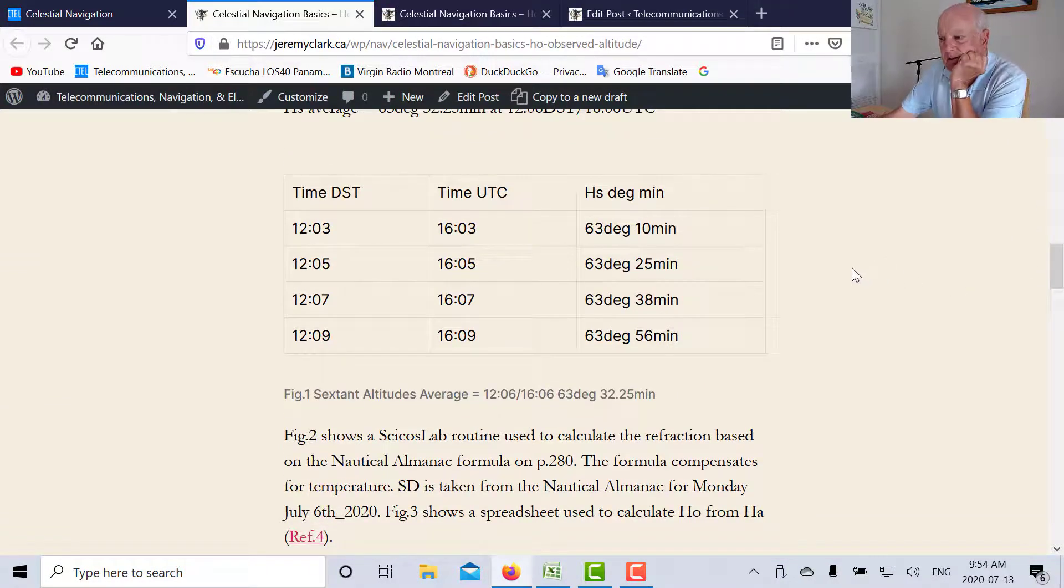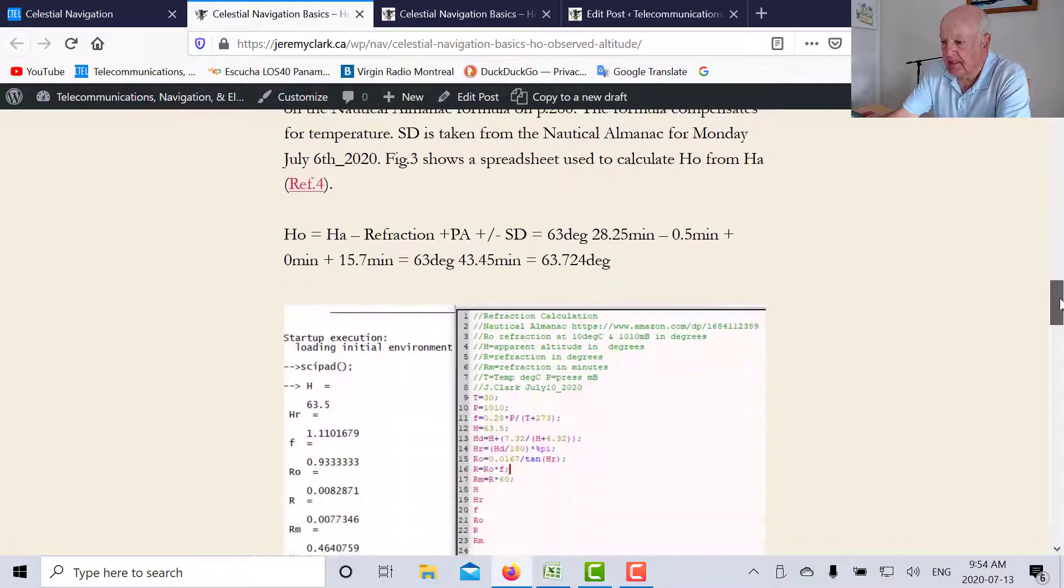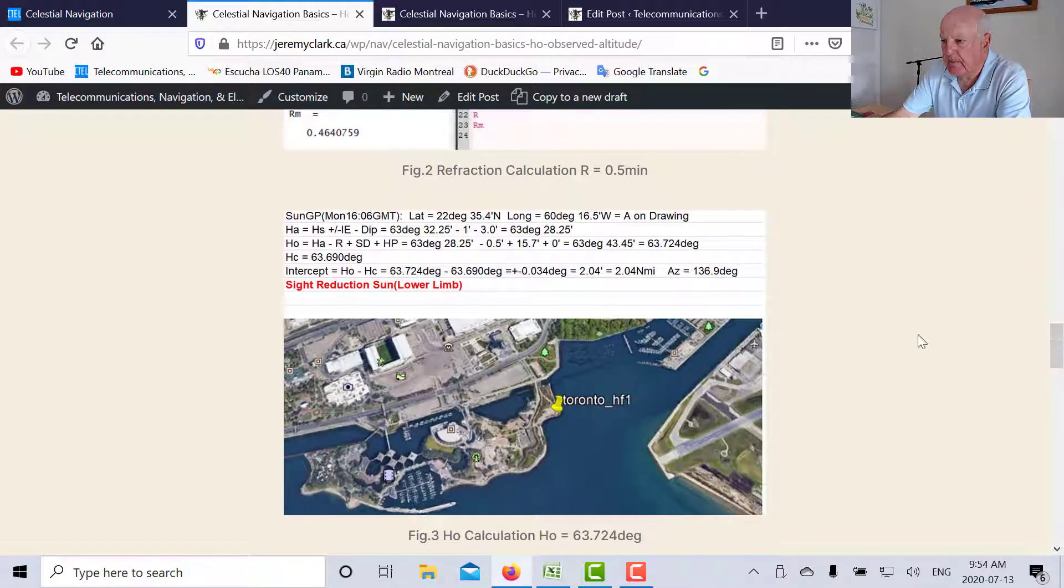On July the 6th we had three readings. The average reading was 63 degrees 32.25 minutes. This was a lower limb reading of the Sun. Then what we did is we applied an index error correction for the sextant of minus one minute.